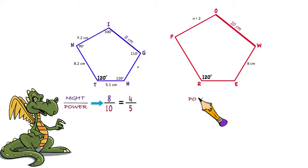What if I asked for the similarity ratio of power to knight? Well, that would be 10 to 8, or 5 to 4. And if I only asked what the similarity ratio is for this problem, then either answer would be correct.